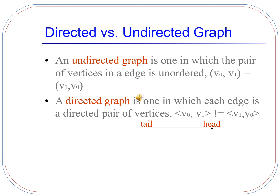Directed vs. undirected graph: an undirected graph is one in which the pair of vertices in an edge is unordered, meaning V0 to V1 is equal to V1 to V0. In a directed graph, each edge is a directed pair of vertices, so V0 to V1 is not equal to V1 to V0. In a directed graph there is a certain starting and ending point, but in an undirected graph there is no certain ending or starting point of an edge.